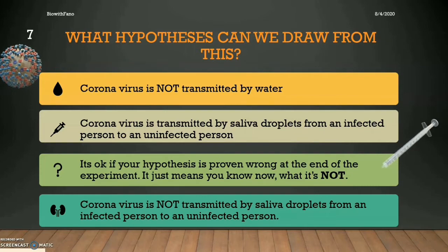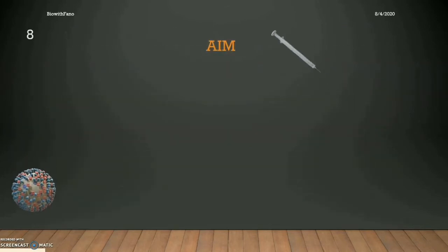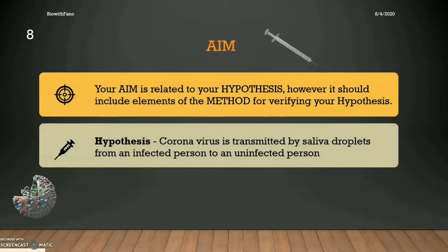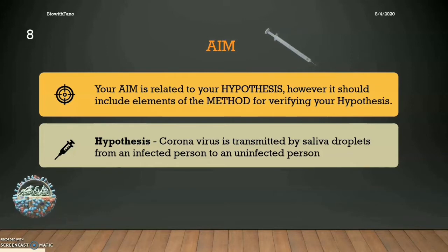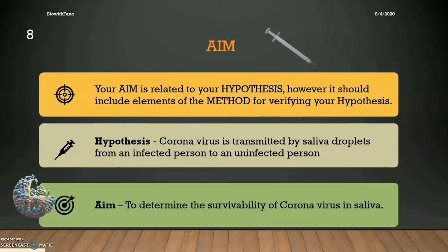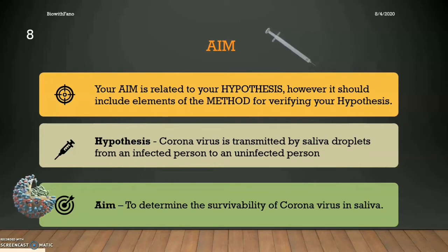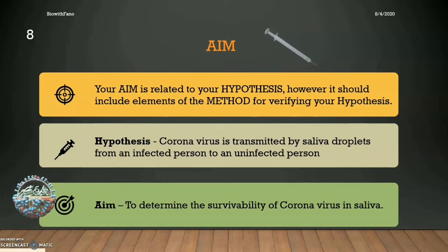So how do you get your aim? Let's take our second hypothesis. Your aim should come from the hypothesis and include elements from the method. So if you want to see if coronavirus is transmissible by saliva, one thing we can do is observe if the coronavirus can survive in saliva to begin with. Our aim could be to determine the survivability of coronavirus in saliva.